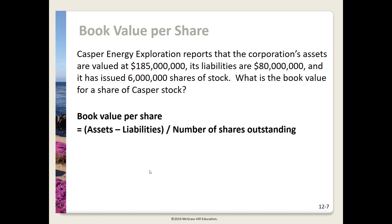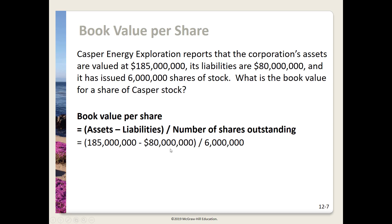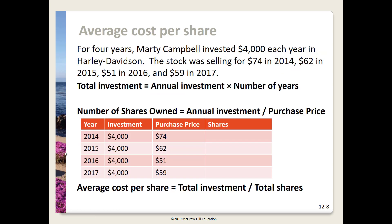Let's look at book value per share. Casper Energy Exploration reports that the corporation's assets are valued at $185 million, its liabilities are $80 million, and it has issued 6 million shares of stock. What's the book value for a share of Casper stock? We take assets minus liabilities, then divide by shares: $185 million minus $80 million equals $105 million, divided by 6 million shares, giving us $17.50.